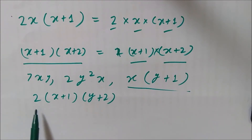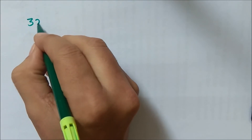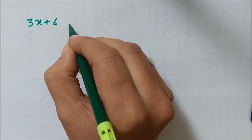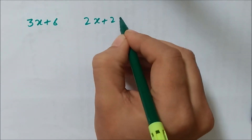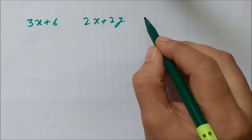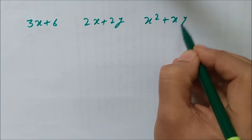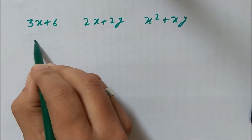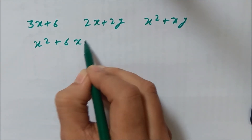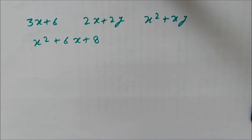Factors of x plus 1 into y plus 2 are x plus 1 and y plus 2. Now consider expressions like 3x plus 6, or 2x plus 2y, or x squared plus xy, or x squared plus 6x plus 8. Can we look at the factors here directly? They are not visible. So it is not obvious what the factors of these expressions are. A systematic method is required to factorize these expressions.